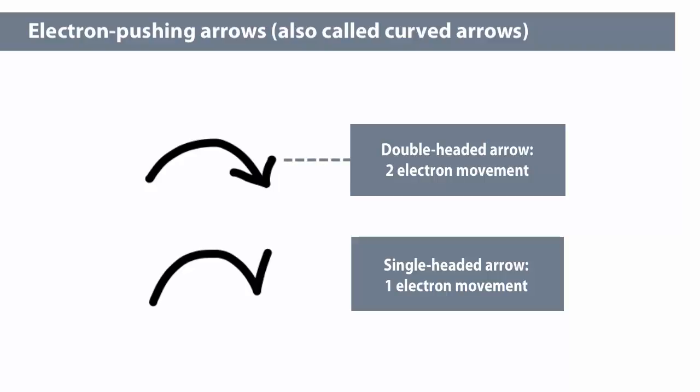A double-headed arrow means that two electrons are involved, while a single-headed arrow, also called a fishhook arrow, means that one electron is involved.